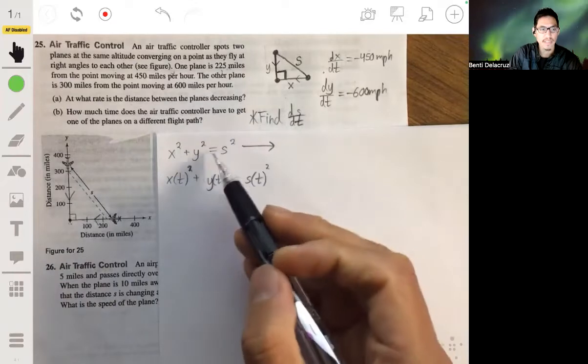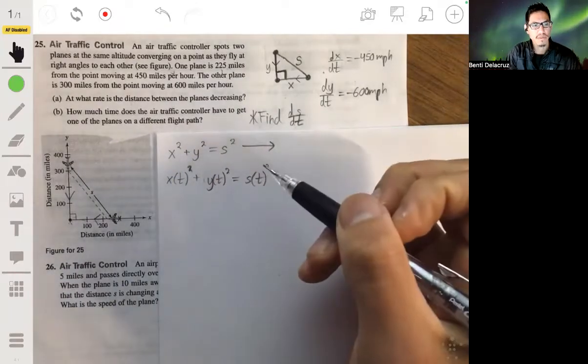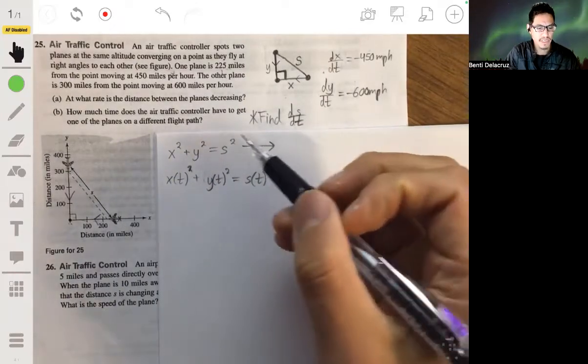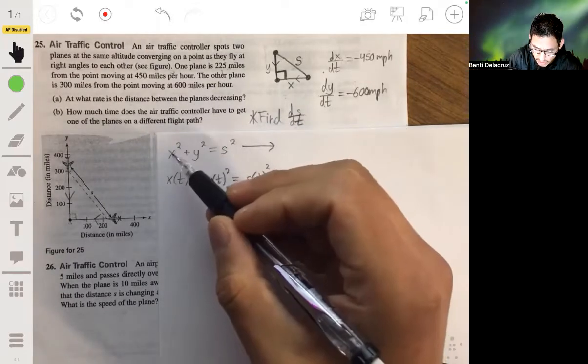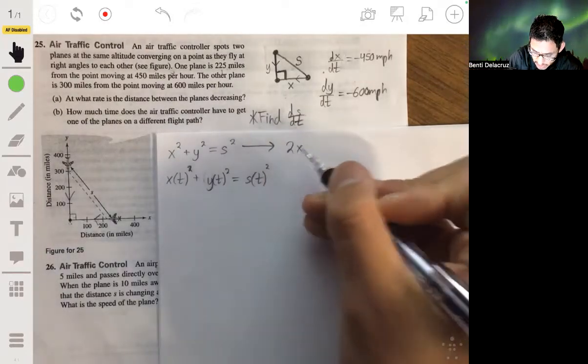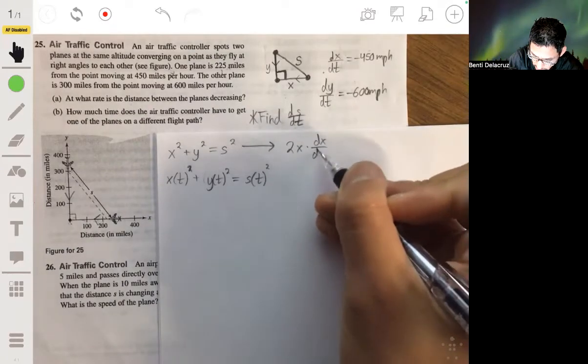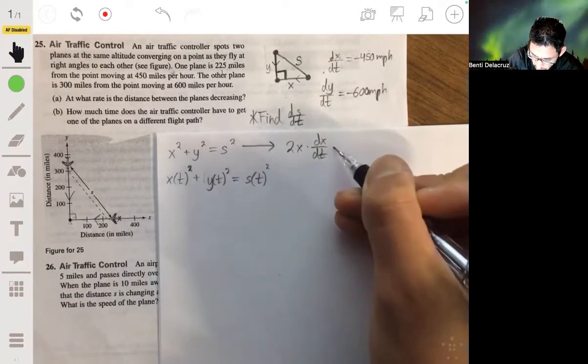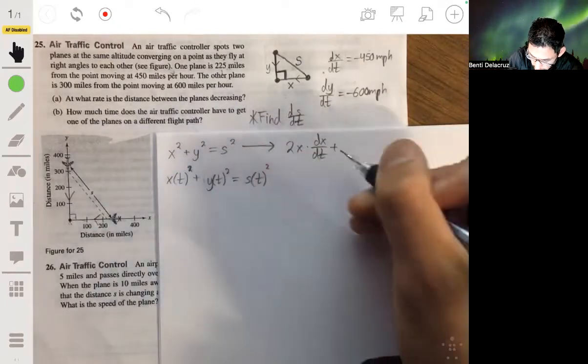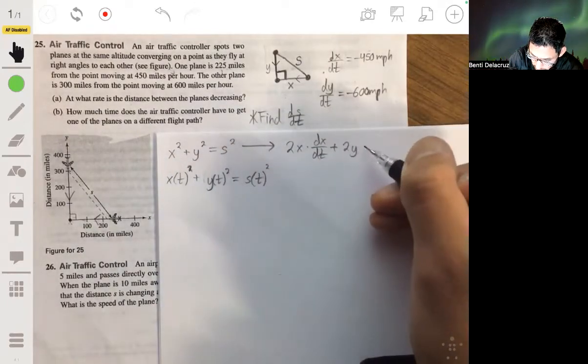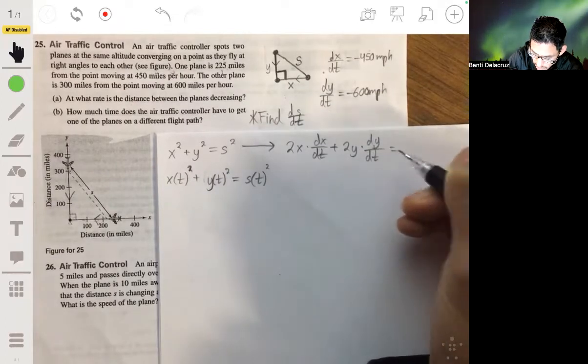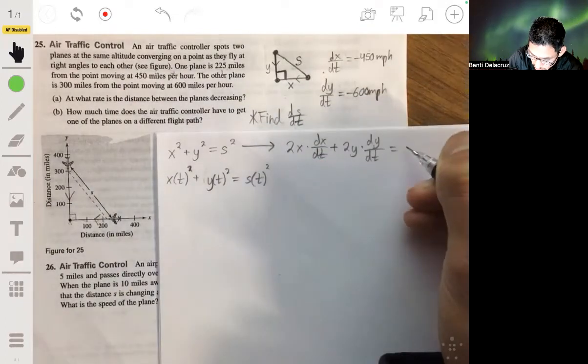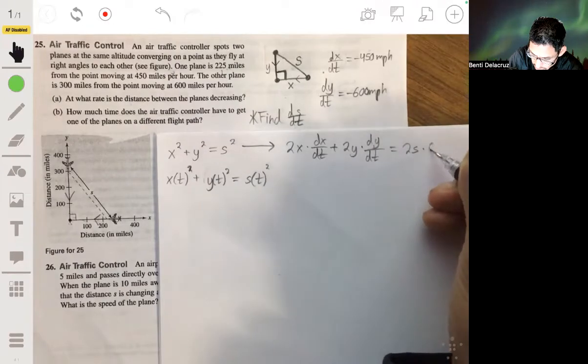So differentiating this with respect to time, it's kind of similar to what we did in implicit differentiation, but it's really a chain rule. So we're going to have, using the power rule, we're going to have 2X times dx over dt plus 2Y times dy over dt is equal to 2S times dS over dt.